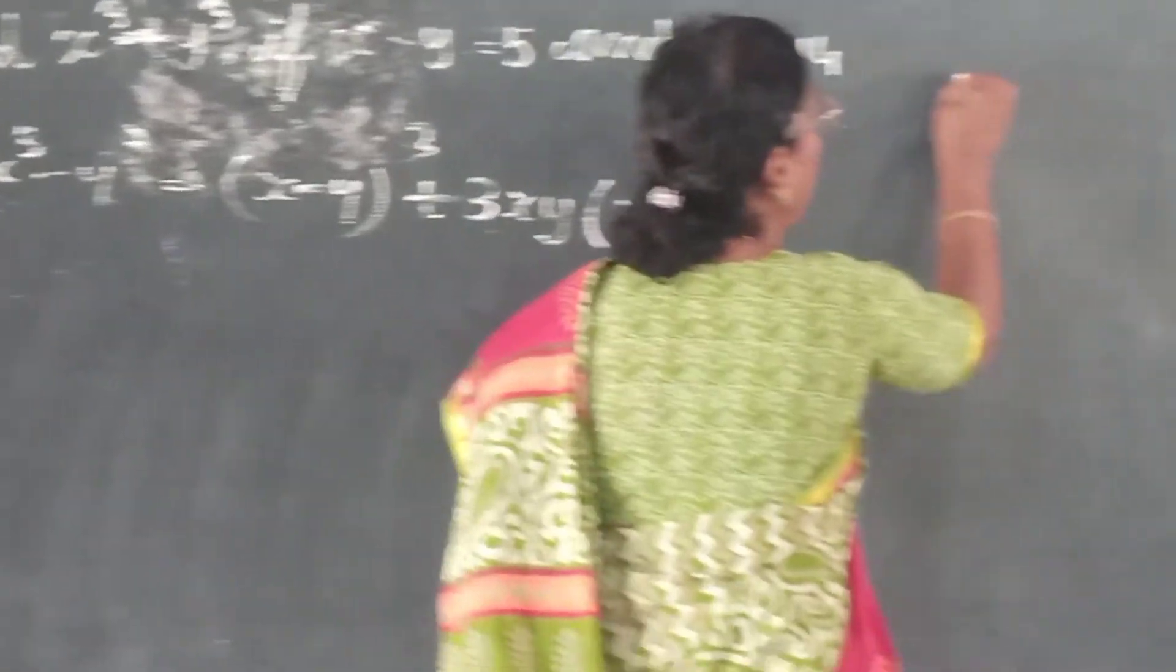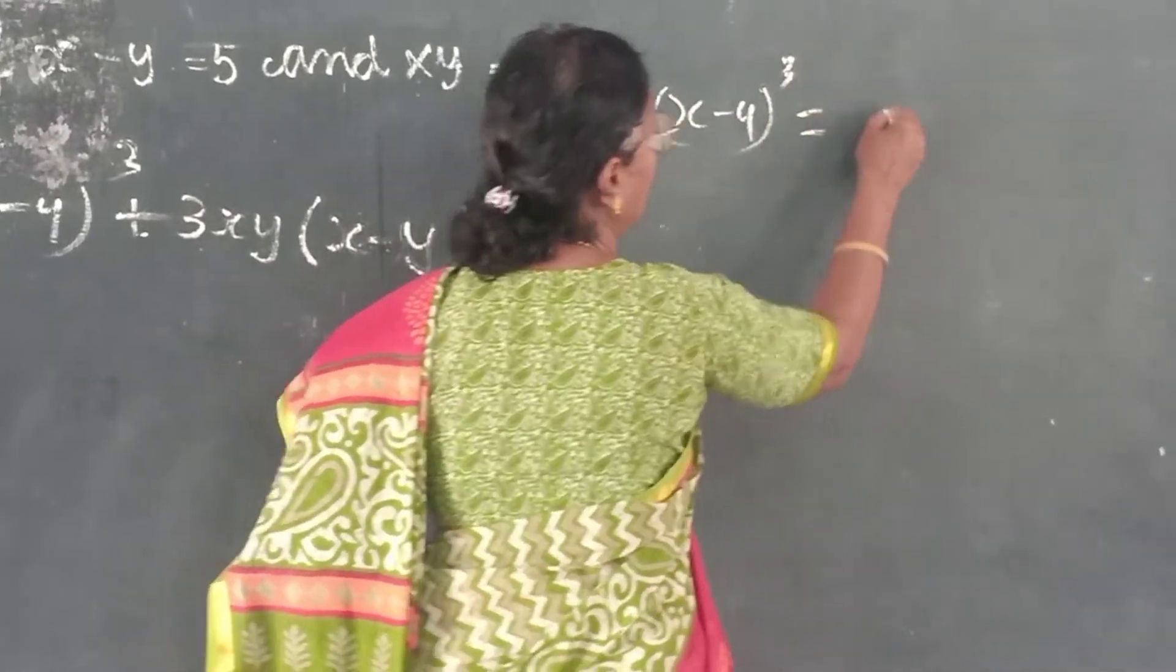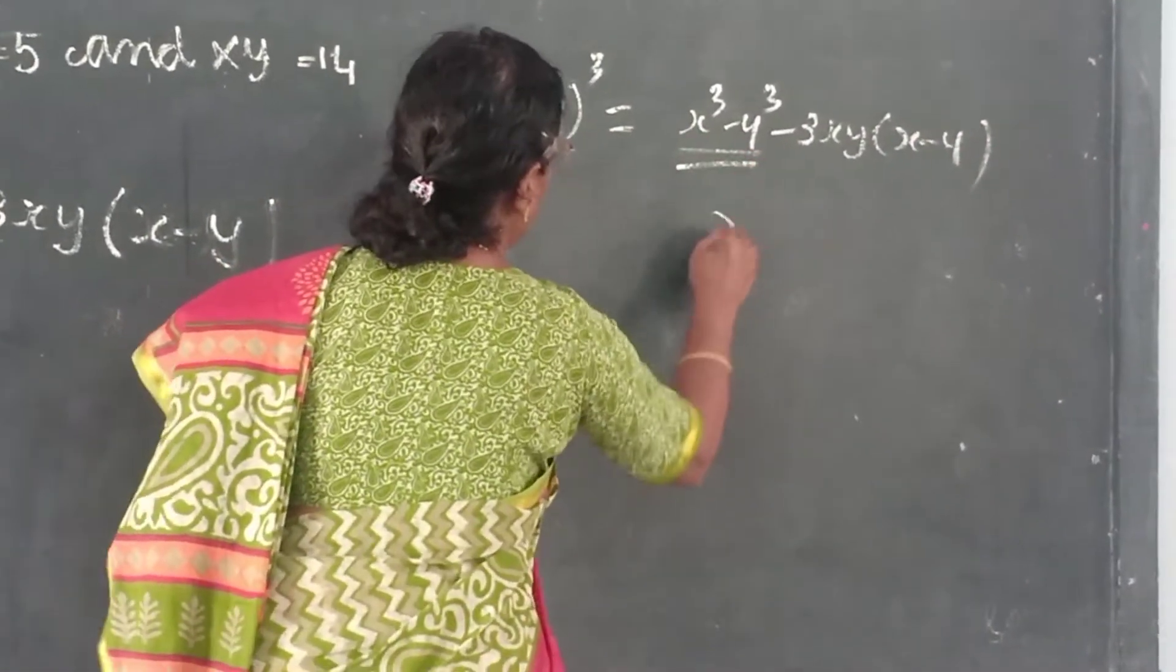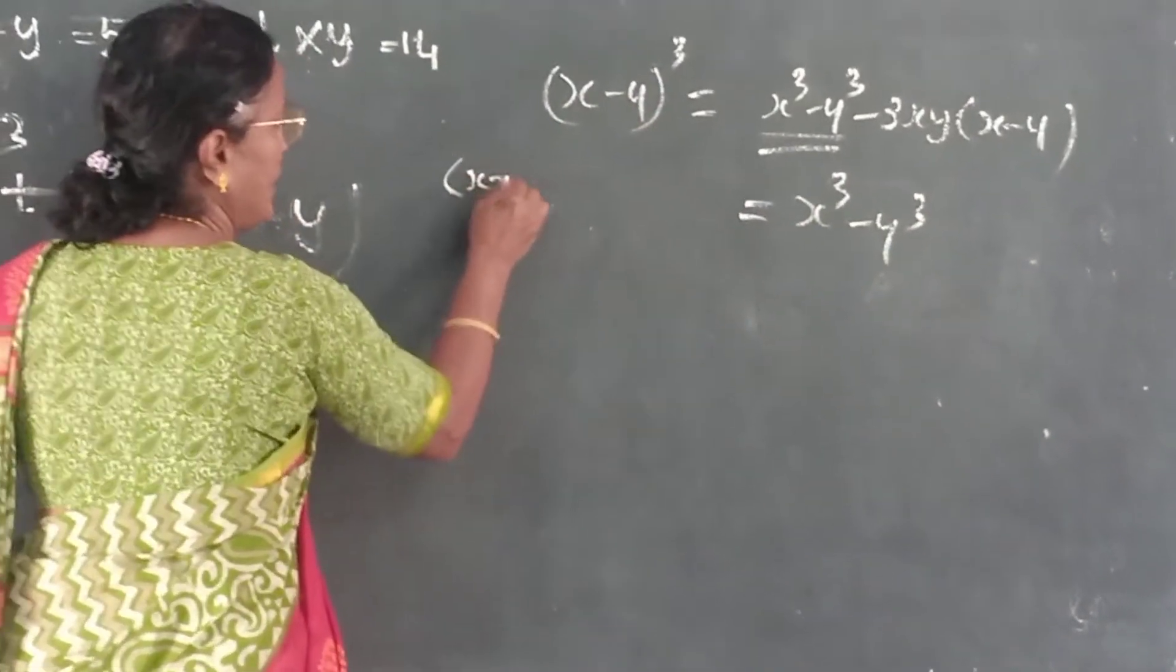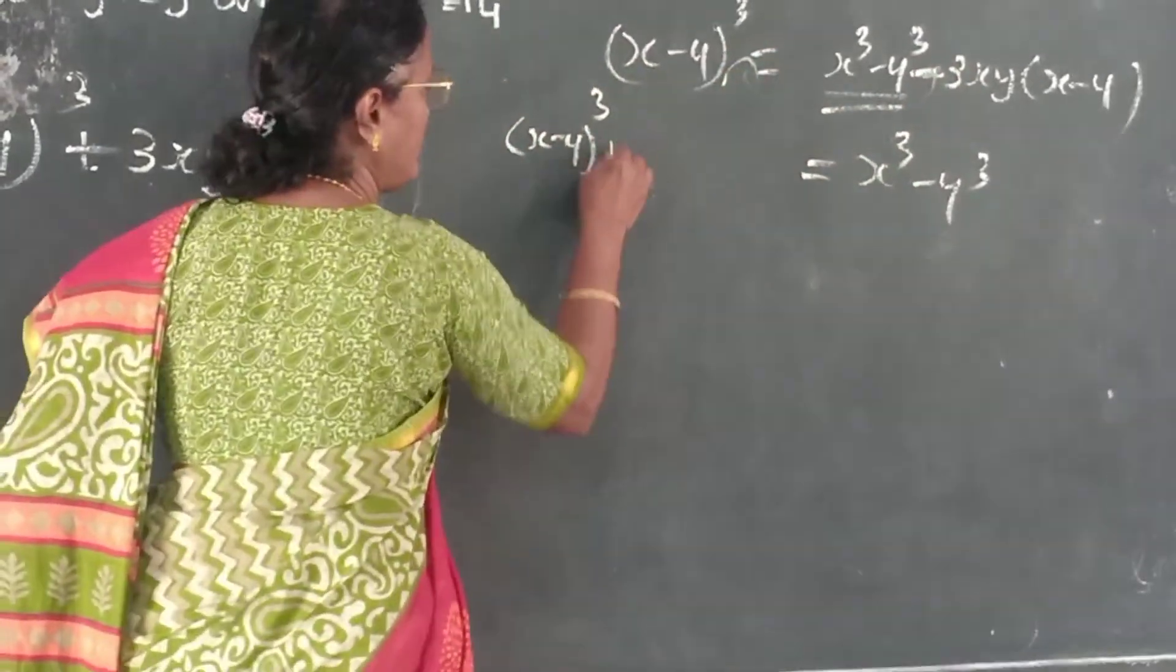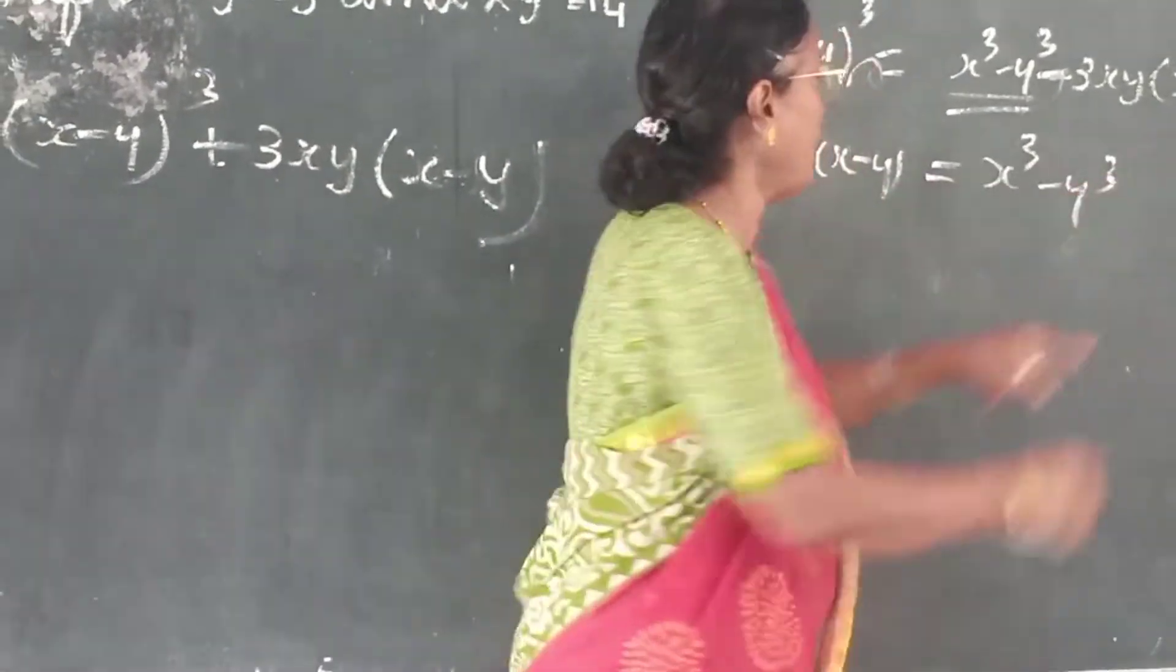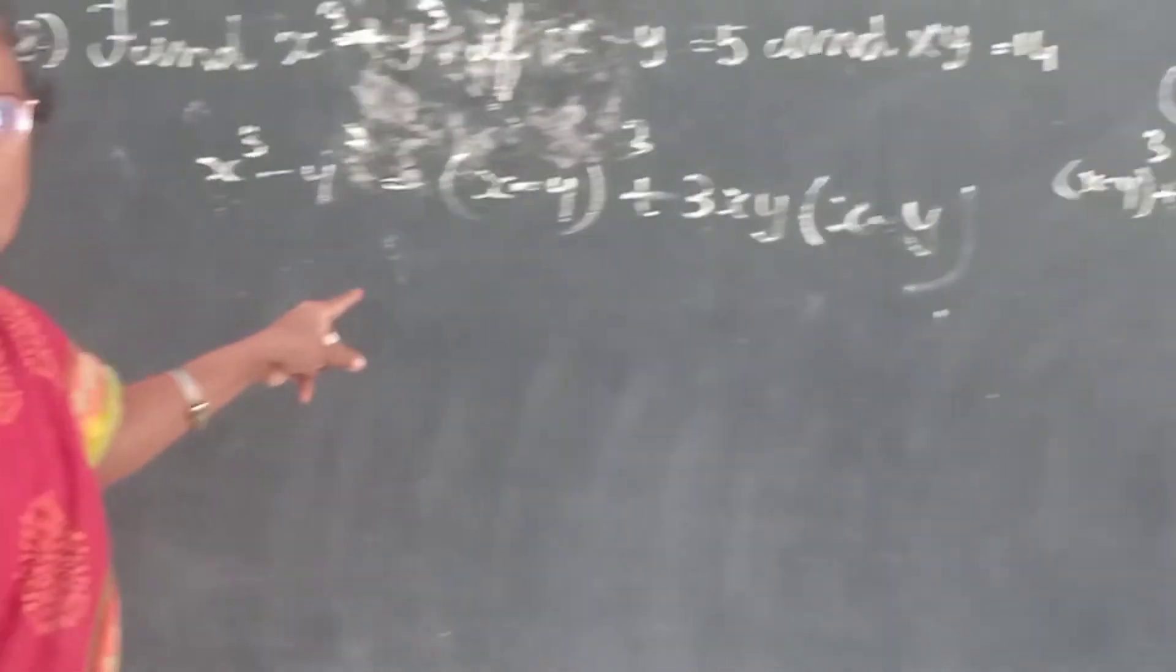Suppose if you don't know, I told you: (x minus y)³ equals x³ minus y³ minus 3xy(x minus y). From this you can derive x³ minus y³ equals (x minus y)³ plus 3xy(x minus y). This is minus, this is minus. Minus when it comes to the other side? Plus. Don't change this symbol. Only this symbol alone should be changed. You got it or not? Do you follow or not?